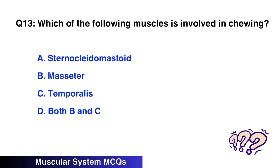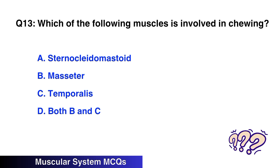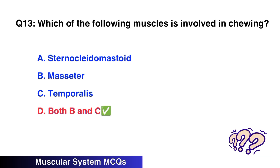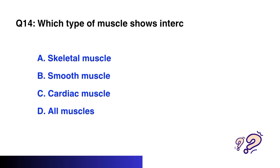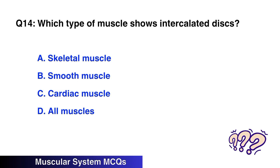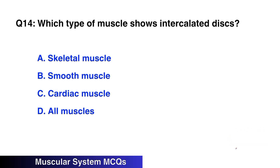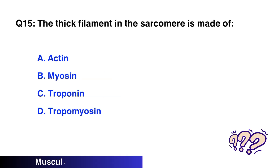Question No. 13: Which of the following muscles is involved in chewing? The right option is C: Cardiac muscles. Question No. 14 (15): The thick filament in the sarcomere is made of — the right option is B: Myosin.